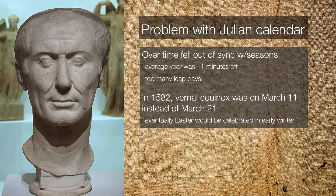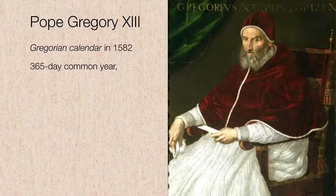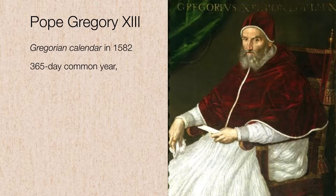But by 1582, the sun was arriving on the vernal equinox a full 10 days ahead of schedule. And this was shifting the corresponding religious celebrations earlier and earlier. Eventually they understood Easter would be celebrated in what we now call late December, early January, which was really just not exactly in keeping with the spirit of Easter. In 1582, Pope Gregory XIII introduced the Gregorian calendar, and we use it to this day.